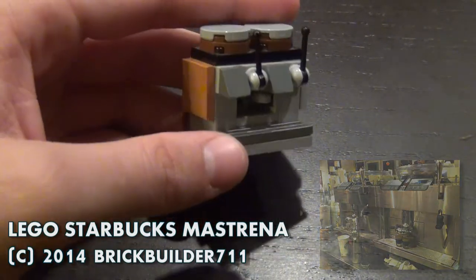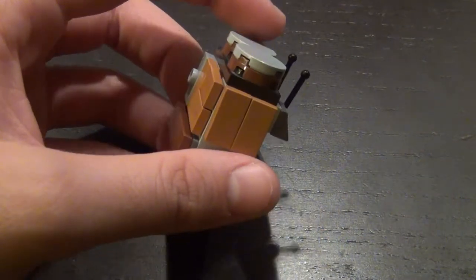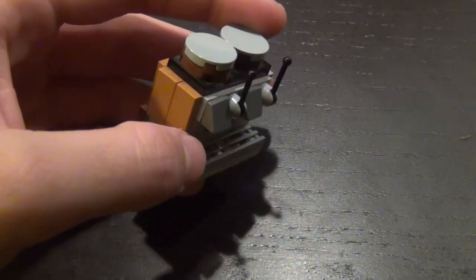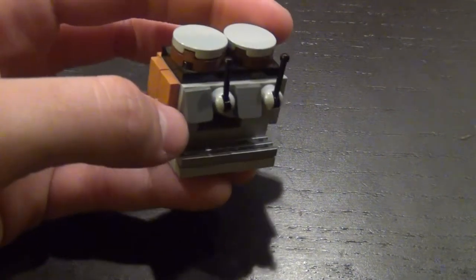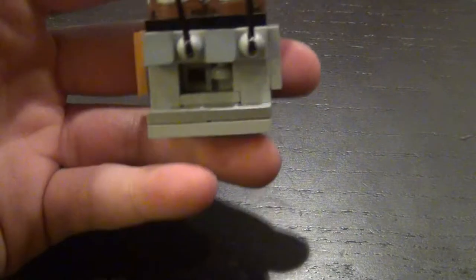This is the Mastrena Espresso Machine. It is basically the rank and file Espresso Machine that you would find in pretty much any Starbucks location in the seven continents. Well, I'm not sure if there's a store in Antarctica, but whatever.